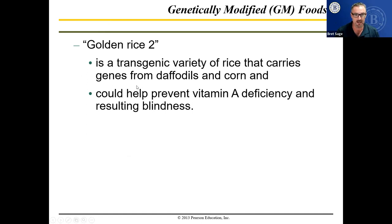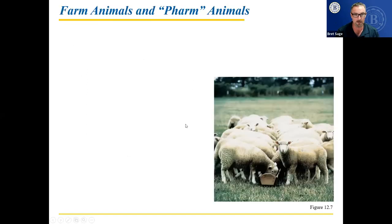Golden rice version two: a transgenic variety of rice containing genes from both daffodils and corn could help prevent vitamin A deficiency and resulting blindness. If you don't get enough vitamin A, you may not be able to develop your vision properly.